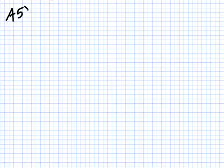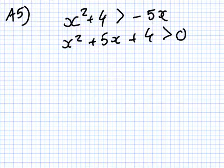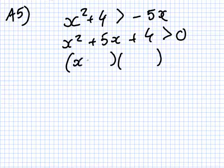Number 5, we want to solve x squared plus 4 bigger than minus 5x. So that's x squared plus 5x plus 4 bigger than 0. So we have x plus 4, x plus 1 bigger than 0.